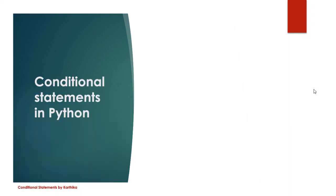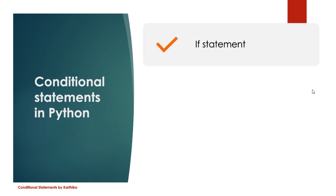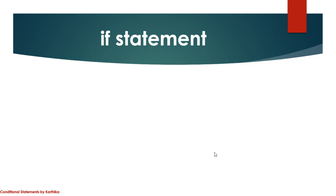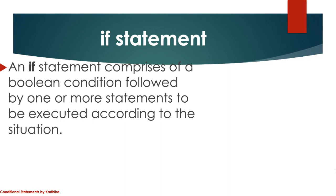Now we are moving on to conditional statements in Python. Sequential statements we already know from programs we've written. For conditional statements, we have three types in Python: first is the `if` statement, also called simple if; second is the `if-else` statement; third is the `if-elif-else` statement. The simple if has only the true part; if-else has both a true part and a false part; and if-elif-else handles multiple conditions.